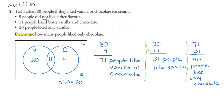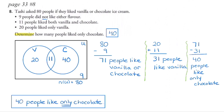We fill in 40 for chocolate only and then verify: 20 plus 40 is 60, plus 11 is 71, plus 9 equals 80 — which matches our universal set. The Venn diagram checks out. So the answer to how many people like only chocolate ice cream is 40.